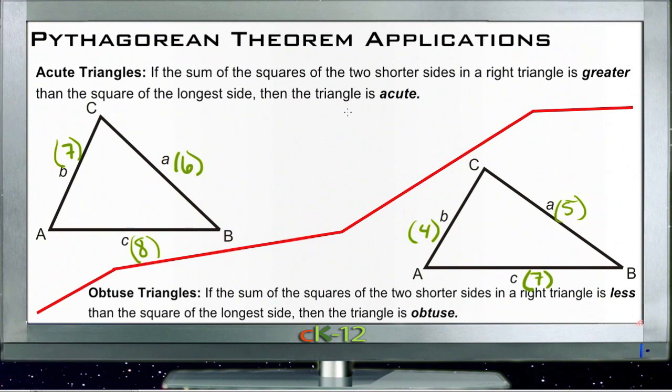Another use for the Pythagorean Theorem is to identify what kind of triangle you have if you've discovered that it's not a right triangle. Remember that if you can multiply the sides a and b by themselves and then add them together to get the same thing as c multiplied by itself, then it is a right triangle. a squared plus b squared is c squared.